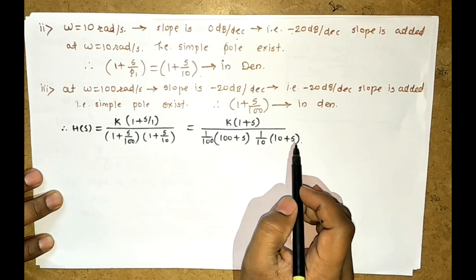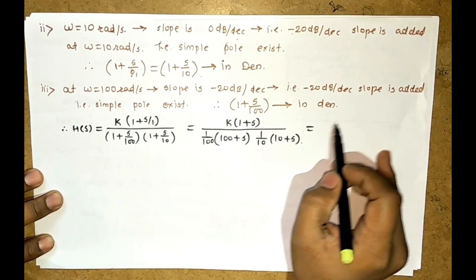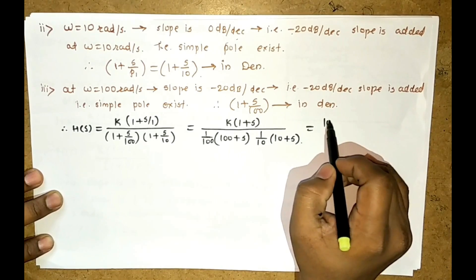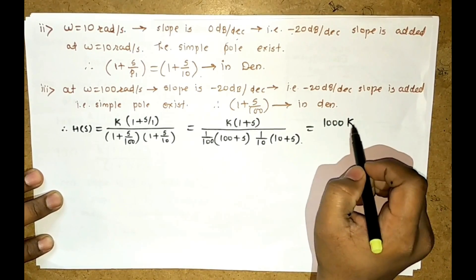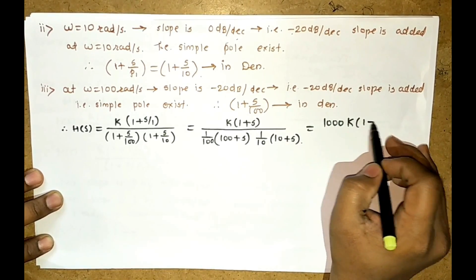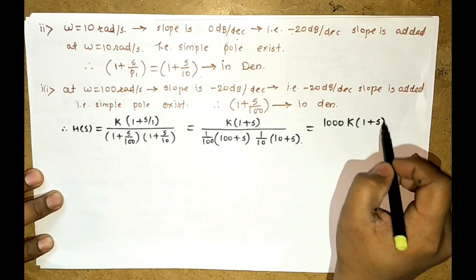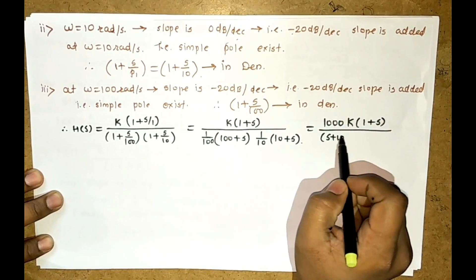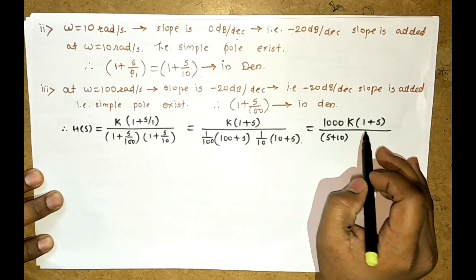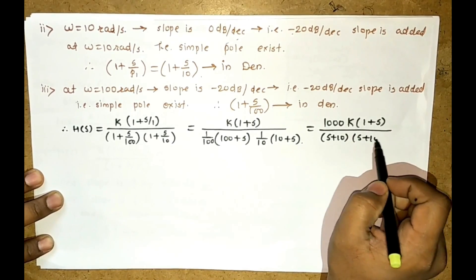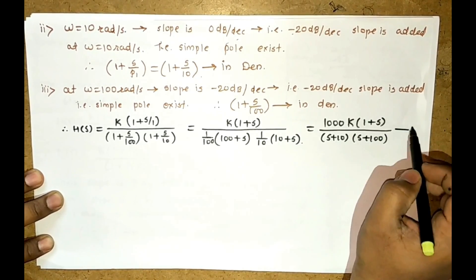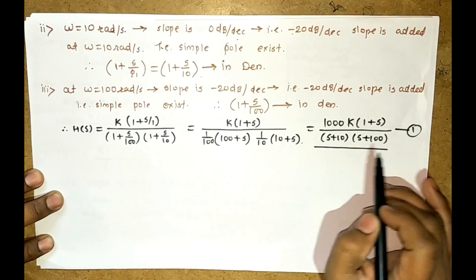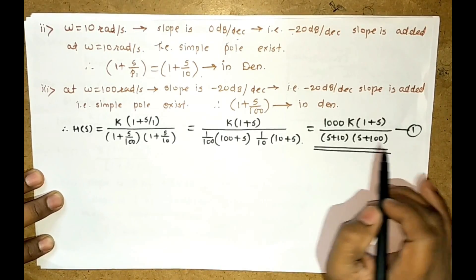Simplifying, we get 1000K times (1 + s) divided by (s + 10)(s + 100). Let us call this equation number one. This is the transfer function, but K is still unknown.